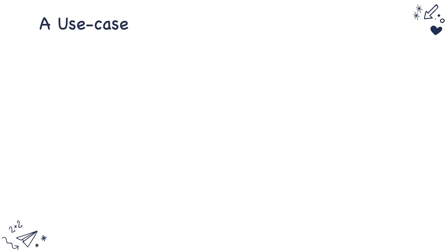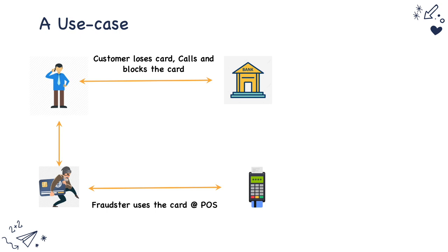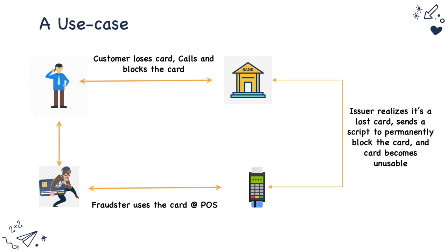Now let's look at a use case. Assume a customer loses a card, calls the bank, and blocks the card. Then a fraudster uses the card at a POS machine and that authorization reaches the issuer bank. The issuer realizes it's a lost card, so the issuer sends a script to permanently block the card in the authorization response to the terminal. The terminal then passes this command to the card, and the card gets permanently blocked.